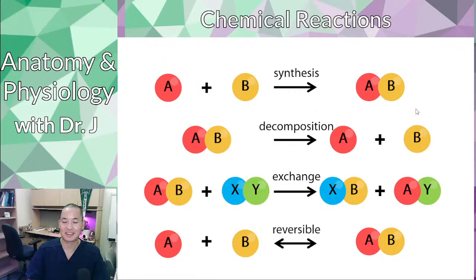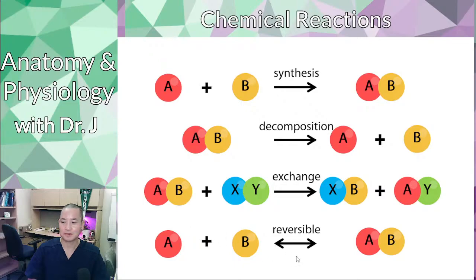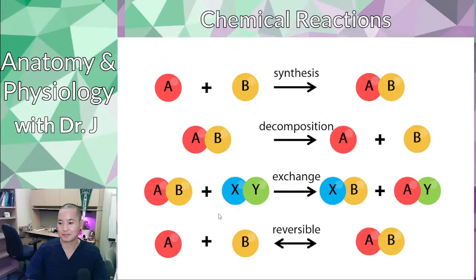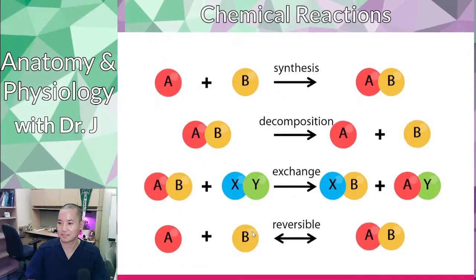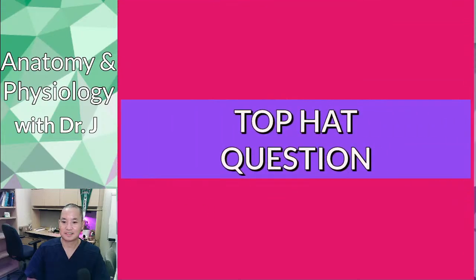These are the basic categories of chemical reactions you should know for this class, especially when you get to A&P 142, where there are a lot of reversible reactions. Reversible reactions are very important for things like solutions we call buffers.